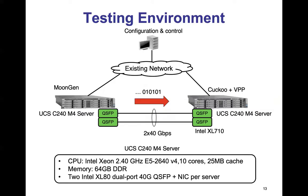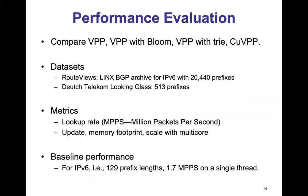Our testing environment has two Cisco UCS servers with high-performing Intel Xeon processors, and the two servers are connected through 80 Gbps fiber optic cables. Packets are generated using MoonGen from one UCS server and then sent to the other server, which processes the IP lookup. In the performance evaluation, we compare QVPP against base VPP, VPP with bloom filters, and VPP with tries. We generated prefixes in the routing table and network traffic based on RouteViews and Deutsche Telekom actual network traffic for IPv6. We measure lookup rates in MPPS (million packets per second), cache hit or miss, update time, memory footprint, and scalability with multi-core processors.